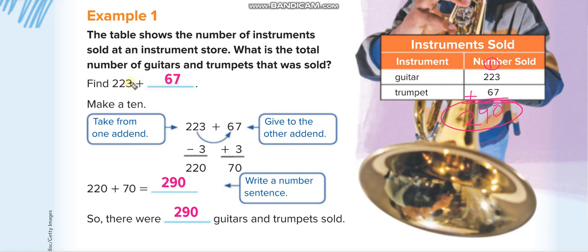What we do is remove the last 3 from 223, so it becomes 220, and add that 3 to 67, making it 70. This gives us two rounded figures: 220 and 70. Now it's easier to add — 220 plus 70 equals 290. So we get the same answer using mental math.